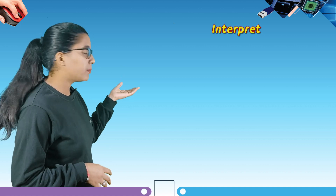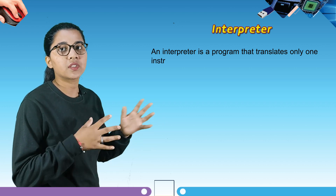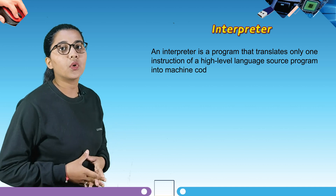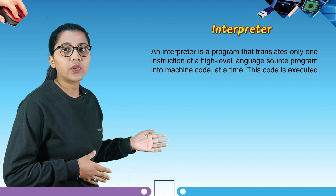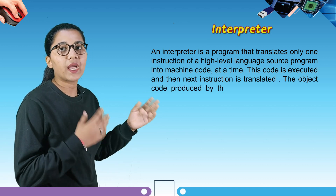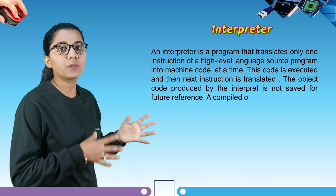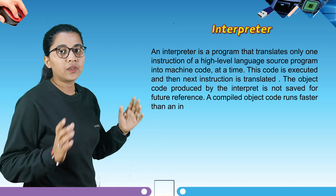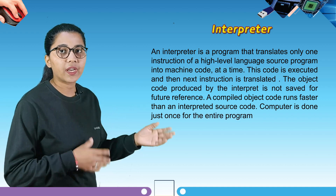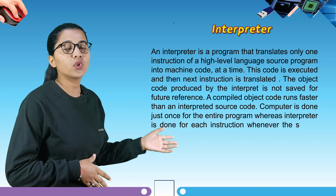Our next topic is interpreter. An interpreter is a program that translates only one instruction of a high level language source program into machine code at a time. This code is executed, and then the next instruction is translated. The object code produced by the interpreter is not saved for future reference. A compiled object code runs faster than an interpreted source code, as compilation is done once for the entire program, whereas interpretation is done for each instruction every time the source program needs to be executed.